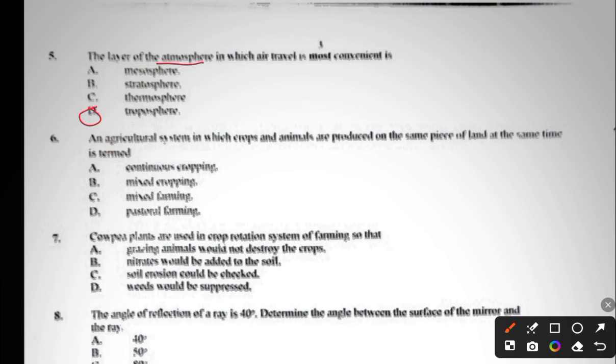The answer to question five is D, troposphere. Question six: an agricultural system in which crops and animals are produced on the same piece of land at the same time is termed continuous cropping, mixed cropping, mixed farming, or pastoral farming. The answer to question six is mixed farming.